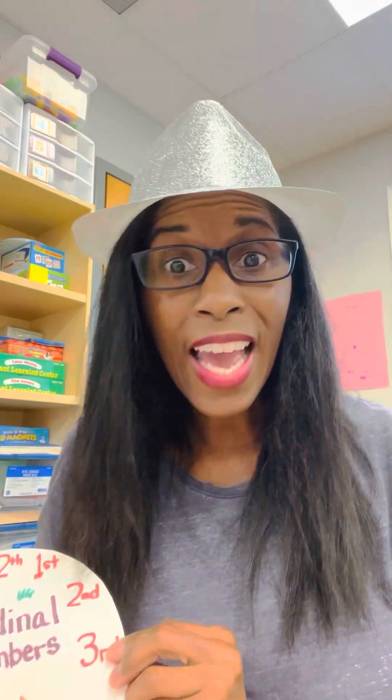G would be the seventh letter, and that's a seven with a TH. H would be the eighth letter, and that's the number eight with a TH. I would be the ninth letter, and that is a nine with a TH. J would be the tenth letter, and that's the number ten with a TH. L would be the eleventh letter, and that is an eleven with a TH. And K is the twelfth letter, and that's the number twelve with a TH, just like we have on our chart. So we just went over A through K — that's the first letter all the way up to the twelfth letter, and that's how you say your ordinal numbers.